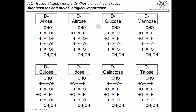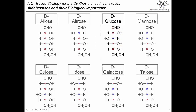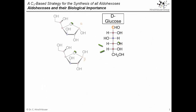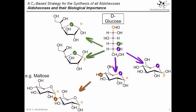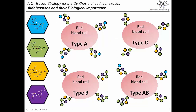Take only the aldohexoses. With their 6 carbon atoms and 4 non-anomeric stereocenters, there are already 8 diastereomers and their corresponding enantiomers. Each of them can form a furanose or a pyranose form, and those can again be connected to other carbohydrates by each available hydroxyl group. So by joining only a few monosaccharides, a huge variability is possible. And this is used by biological systems to store and convey information, such as your blood type.